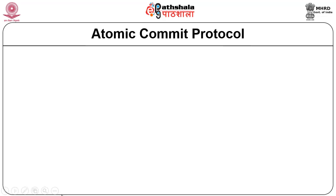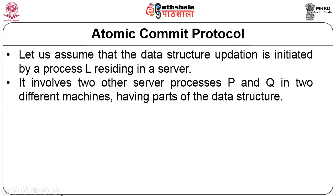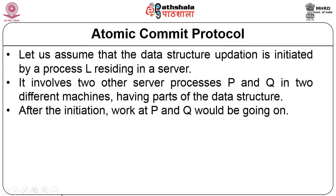In an atomic commit protocol, assume the data structure requiring update is initiated by some specific process — it could be a client or another server. Let us assume there are two servers involved, P and Q. These two servers reside in two different machines at geographically dispersed locations, and both contain certain parts of the data structure. After initiation by server L or client process L, some work continues in P and some other work goes on in Q.